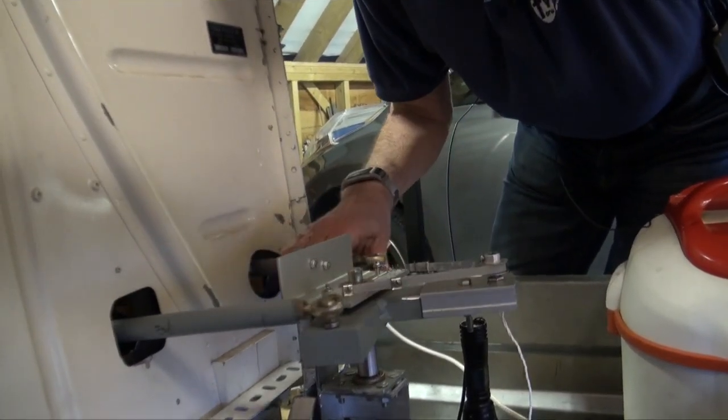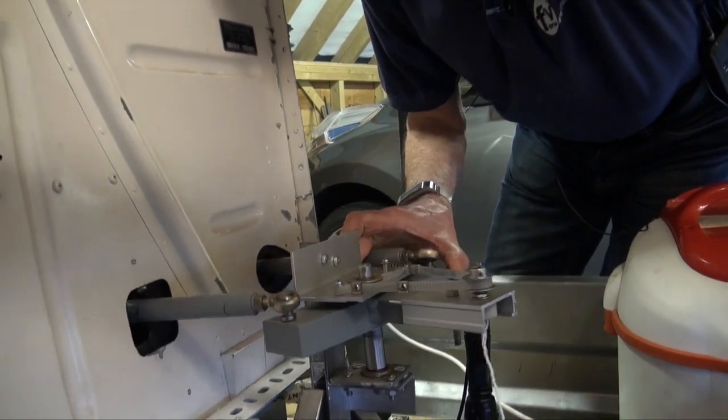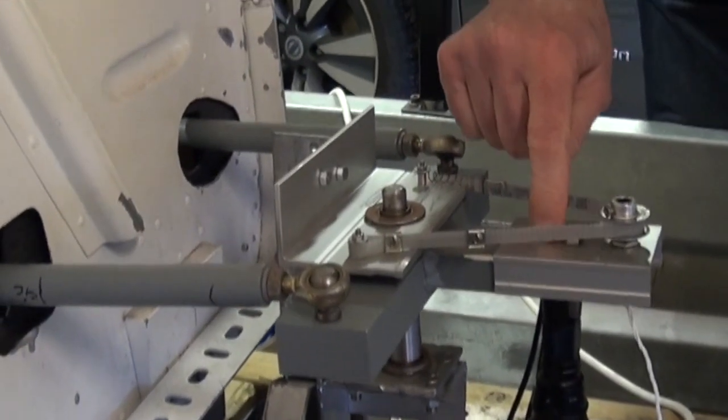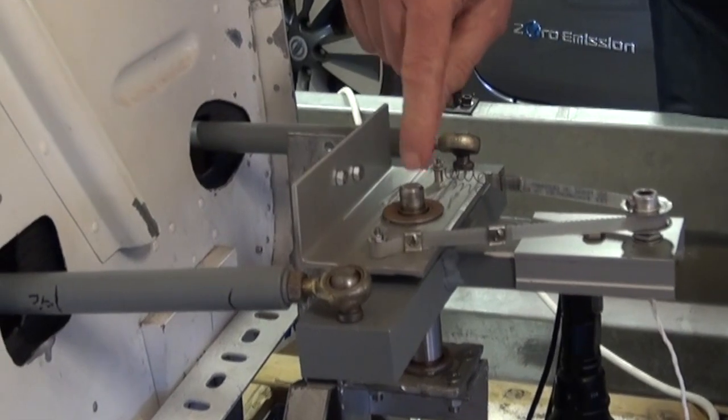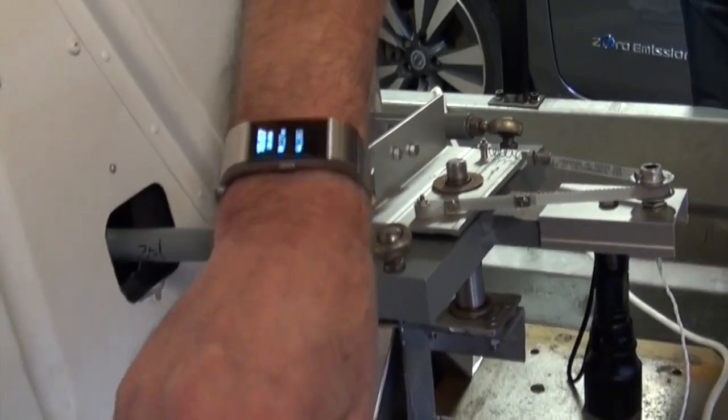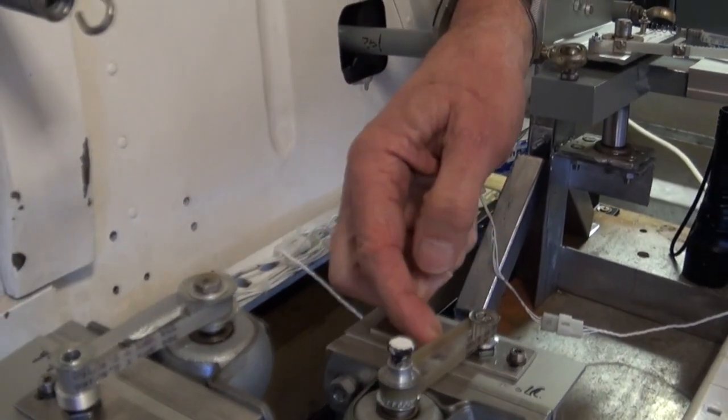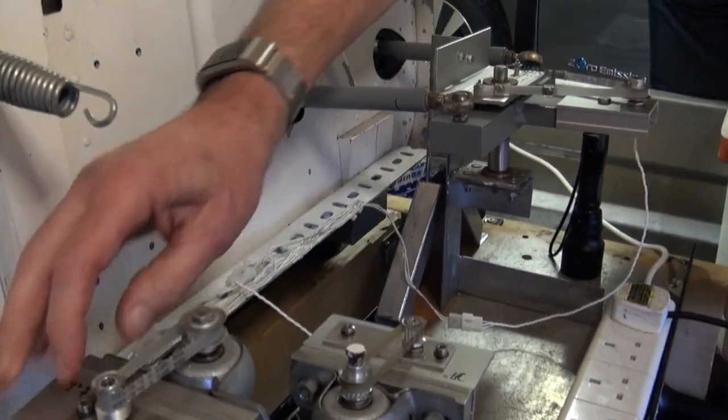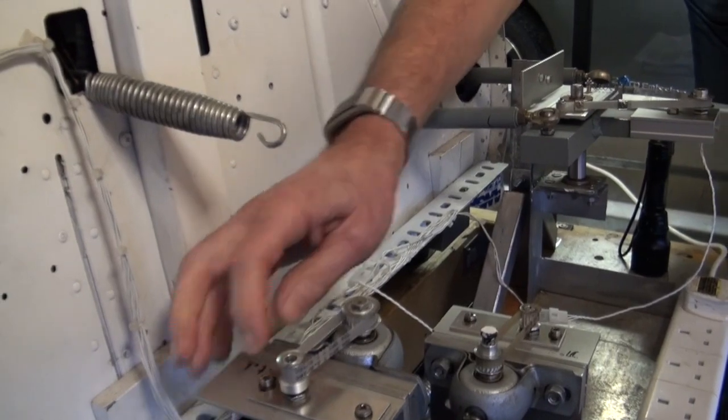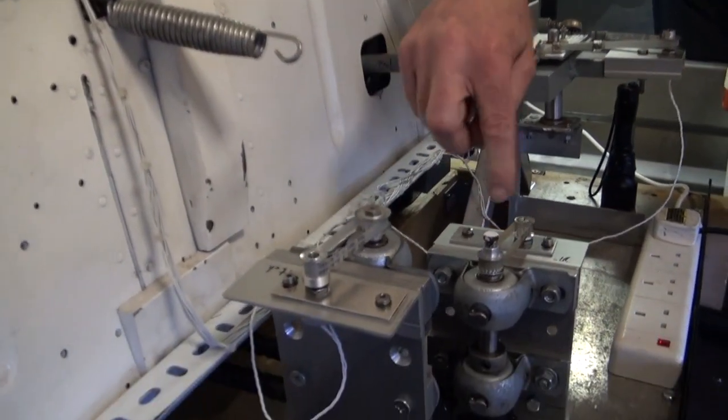Originally I was trying to mount the pot on here somehow. This is springed so that it keeps the belt under constant tension, and the same with this one too—that's sprung as well. Mike made up the springs to do this, which is brilliant.